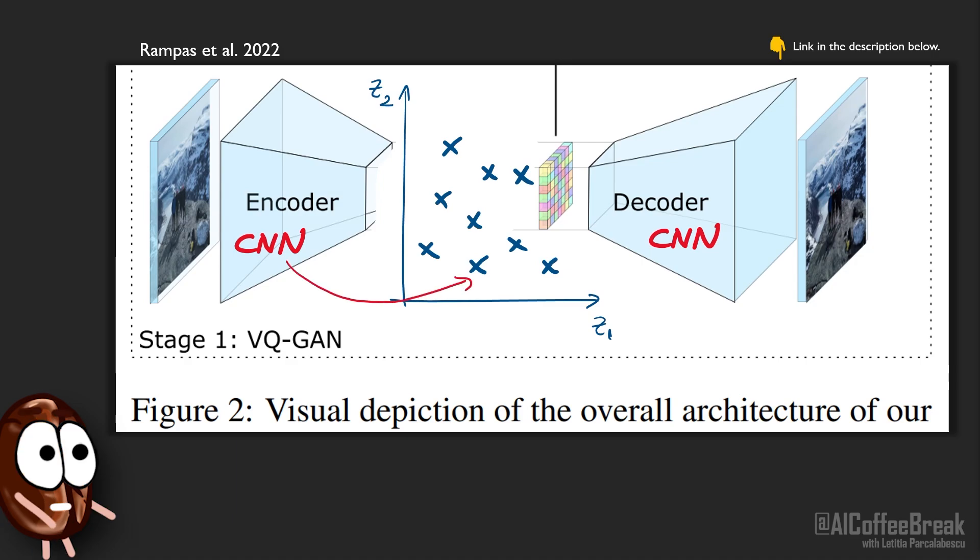So, if the encoder says that this picture lands around here, the quantization step takes the nearest vector from the learned codebook, here in red, and assigns it as a representation for this image, which we call a codeword. In this way, the decoder does not need to reconstruct from any vector in the space, but only from the codebook vectors, which act like the centroids of the data.